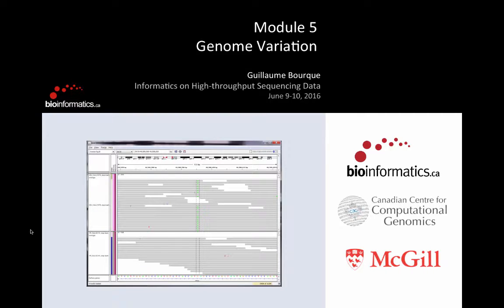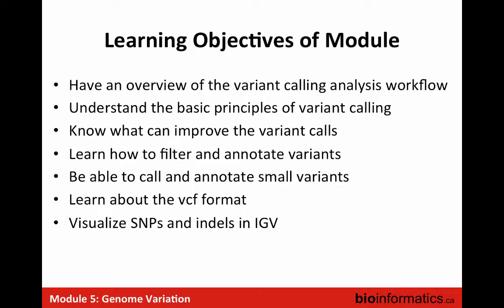This morning's two sessions are about detecting genomic variation - how do you go from data mapped onto the genome to detect single nucleotide variants. We're going to use algorithms to call these variants. The objectives of the module are to go over the steps to call variants, understand the principles of variant calling, know the different steps that can improve variant calling, and know how to filter and annotate variants.